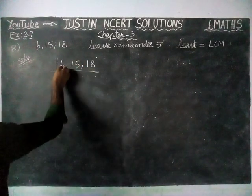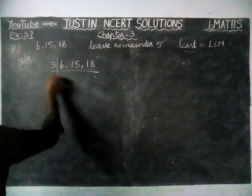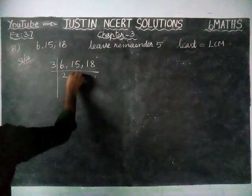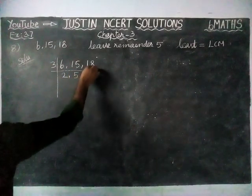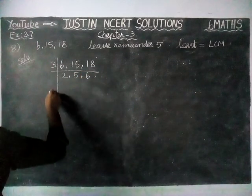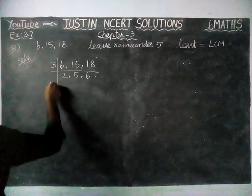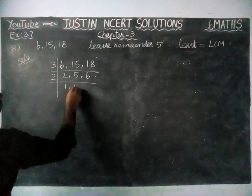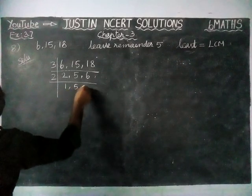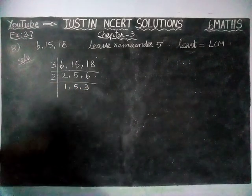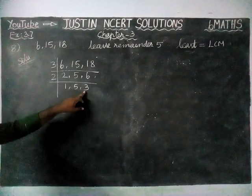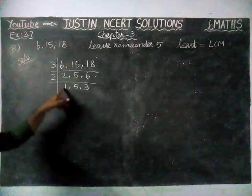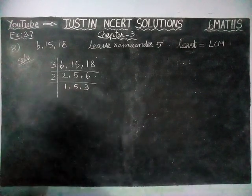Common divisor — we can divide it by 3. 2 threes are 6, 5 threes are 15, 6 threes are 18. Now we are going to divide it by 2, giving 1, 5, and 3. Since 5 and 3 are separate numbers and 1 is a common number, no problem. So we are going to multiply all these numbers.